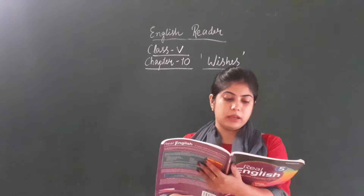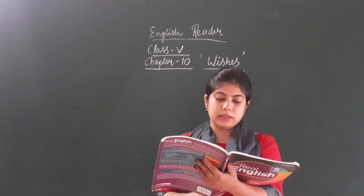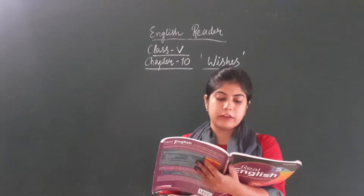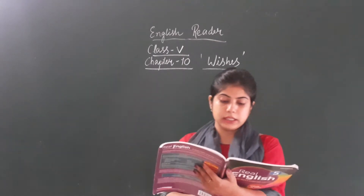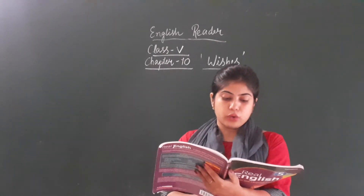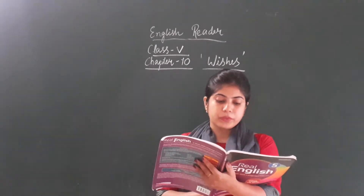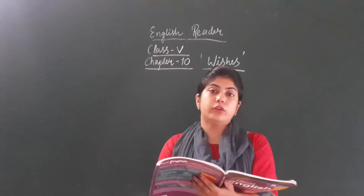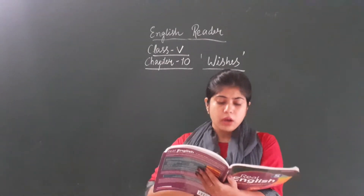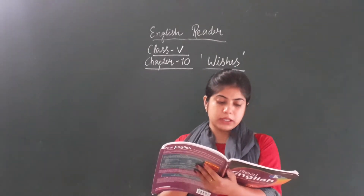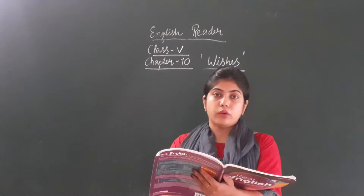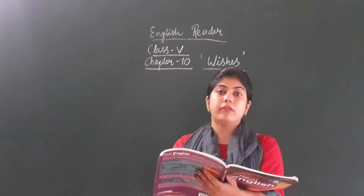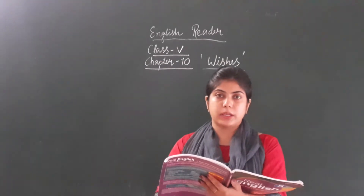The third stanza is: said the third little chick with a small sign of grief — I wish I could find little green leaves. The third little chick is wishing to have green leaves. Grief means sorrow, sadness. So the third little chick is very sad and desires a green leaf.